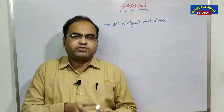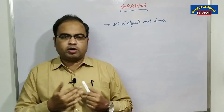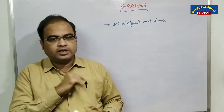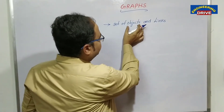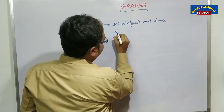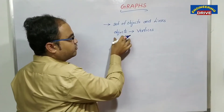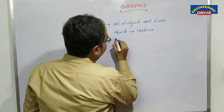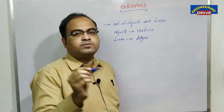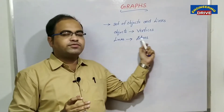Sir, what is the difference between a graph and a tree? Once I complete this video, I will explain the main difference between a graph and a tree at the end. In trees, the objects are called nodes, but in graphs we call these objects as vertices. The links in graphs are referred to as edges. So a graph is a collection of vertices and edges.